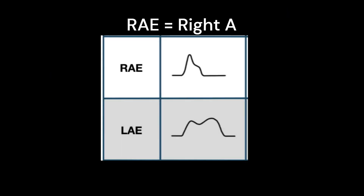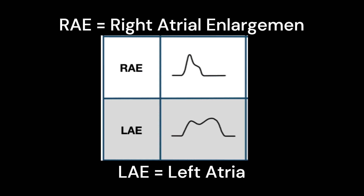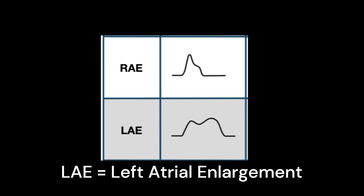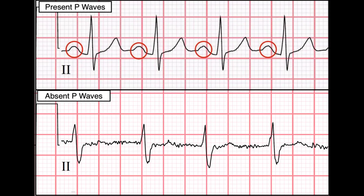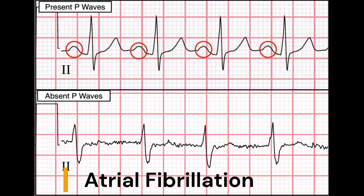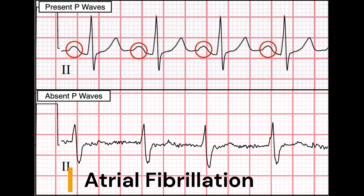For example, in atrial enlargement, the P-Waves may be wider, taller, or more notched than normal. In atrial fibrillation, the P-Waves may be absent or replaced by chaotic and irregular electrical activity.